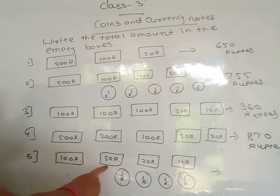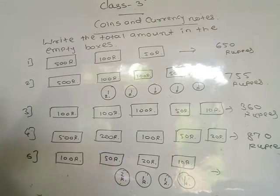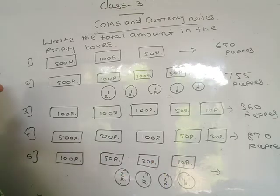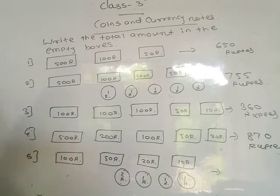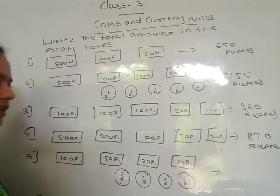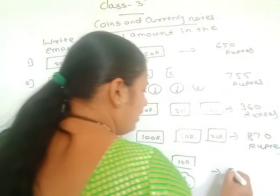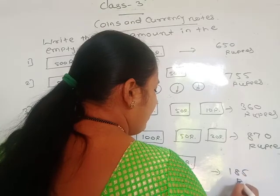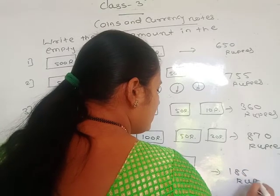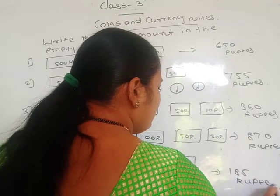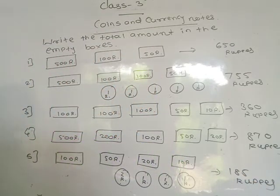This 100 plus 50 is 150, 150 plus 20 is 170, 170 plus 10 is 180. And here 5 rupees coin means 180 plus 5. Write the total amount: 185 rupees.